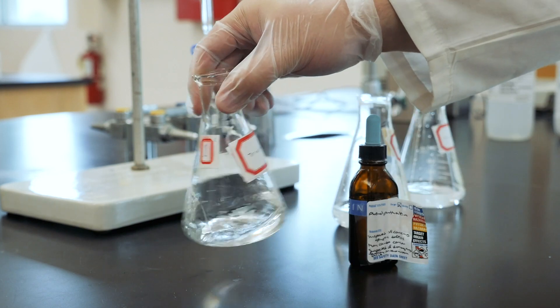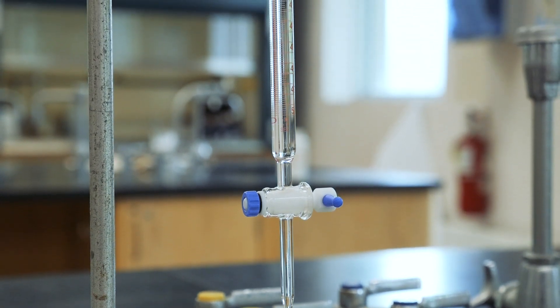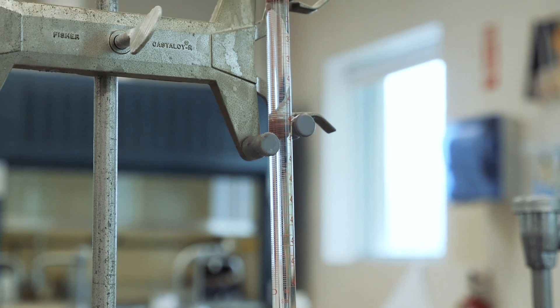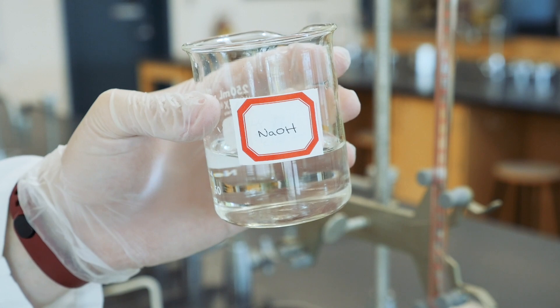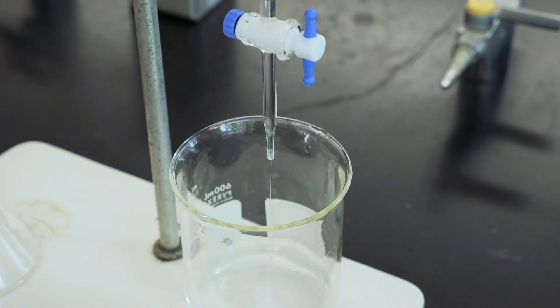We'll be using a burette to measure accurate volumes today. You can check out Appendix D in your lab manual or our video version of it for instructions about the cleaning and use of the burette. Start by rinsing your burette with 10 mls of the sodium hydroxide solution two times.